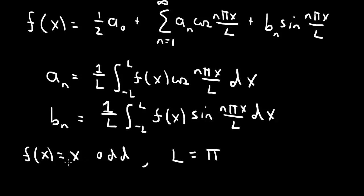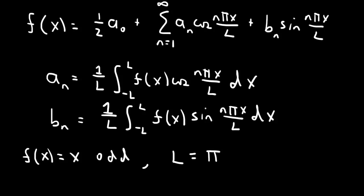So the fact that f of x equals x is an odd function means that the function can be represented only in terms of sine. So all these a coefficients are zero for an odd function. And furthermore, the fact that it's an odd function means we only need to integrate from zero to l and we can multiply by 2.